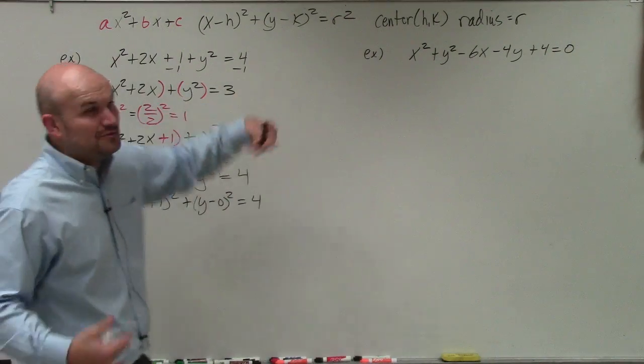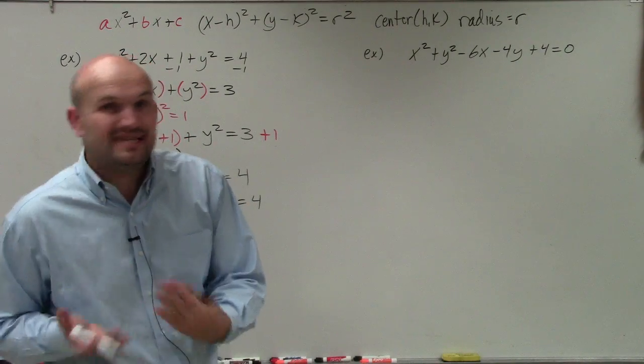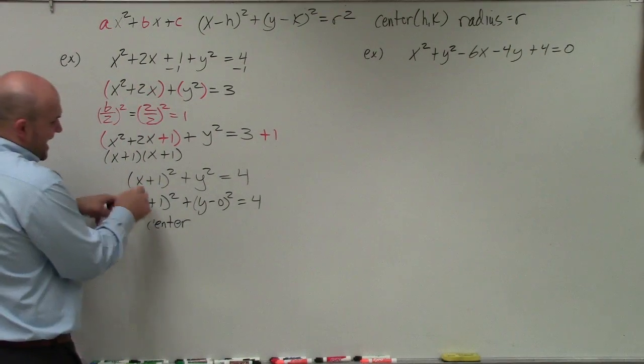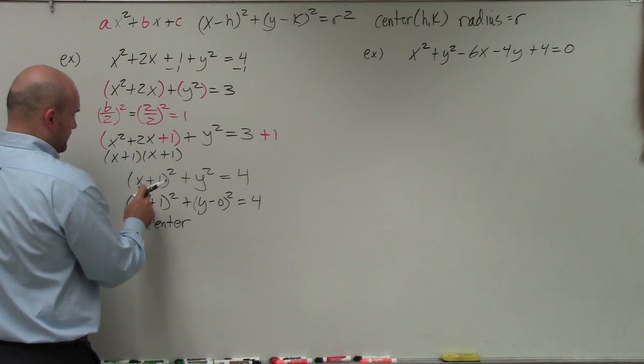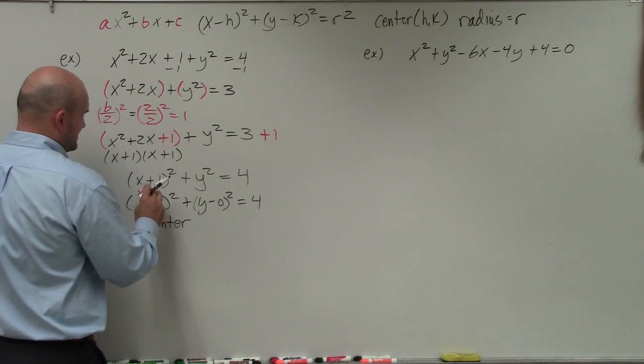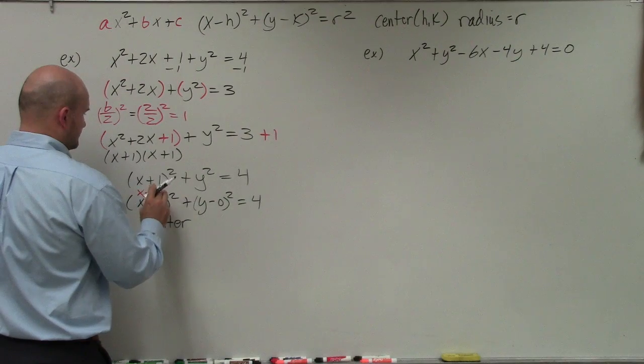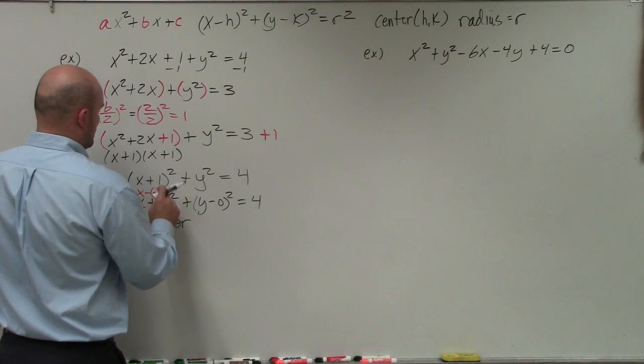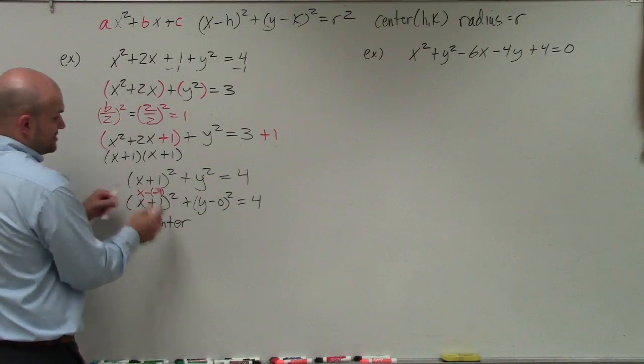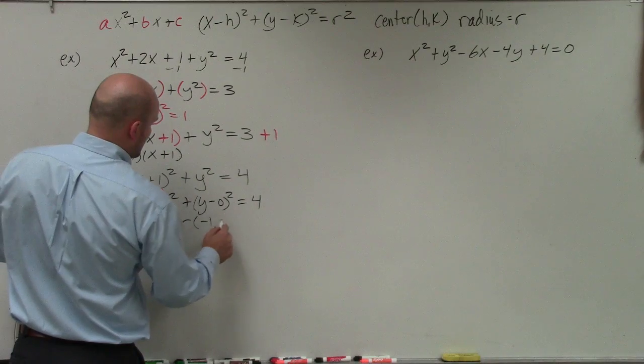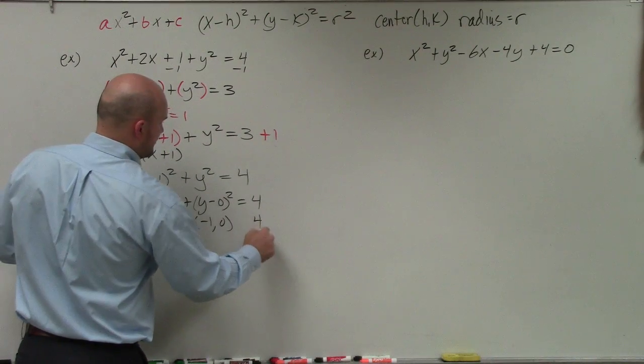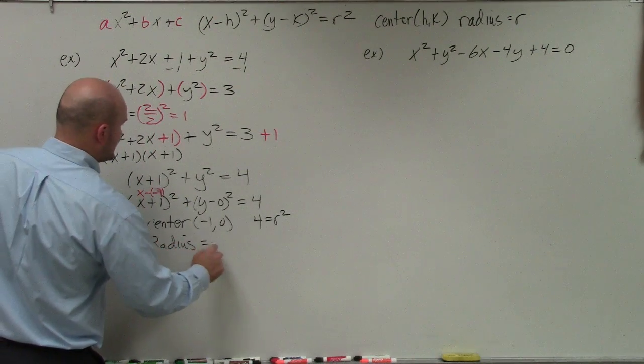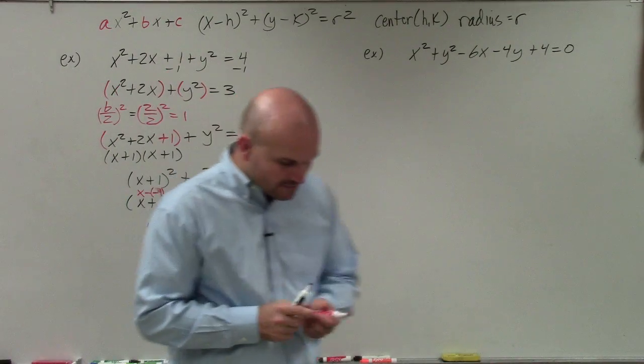This equals 4. Therefore, the value of k, or the y-coordinate of the center of the circle, is 0. When I'm finding my center, remember it's x minus h. We can rewrite that as x minus negative 1. So really, x minus h, so h is negative 1. Therefore, I have negative 1 comma 0. My radius: 4 is equal to r squared, that means my radius is equal to 2.